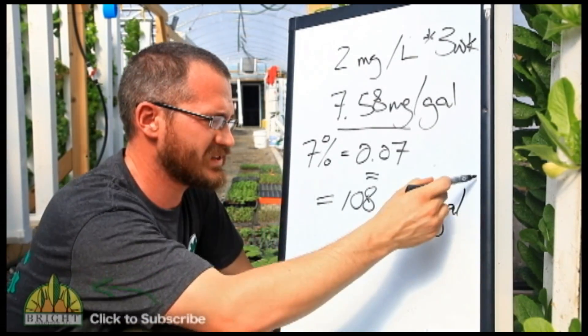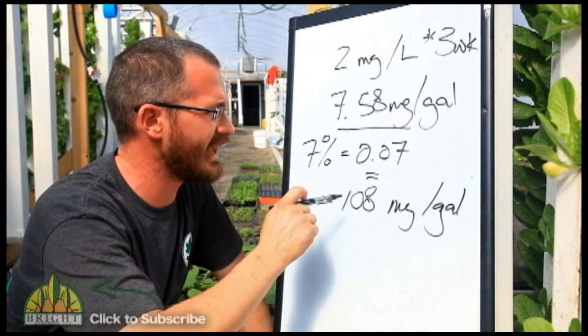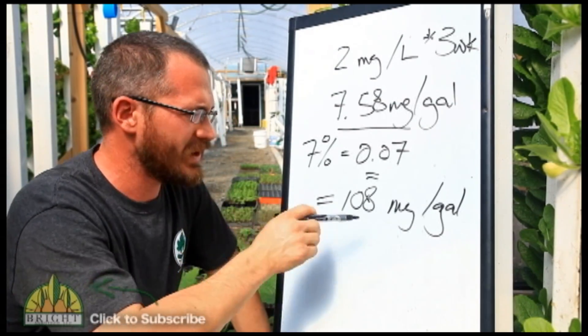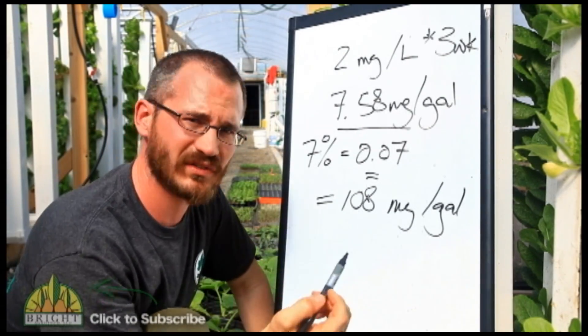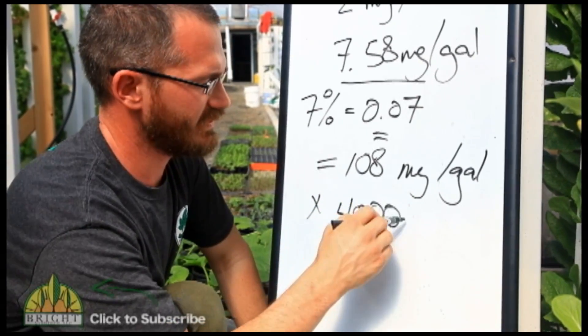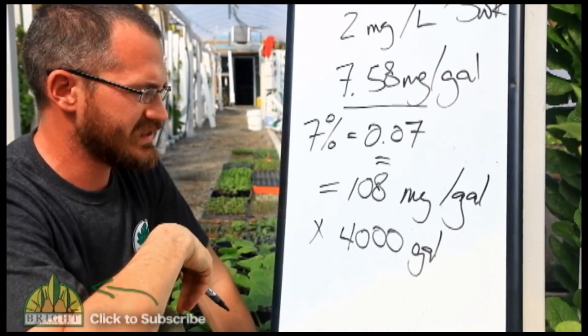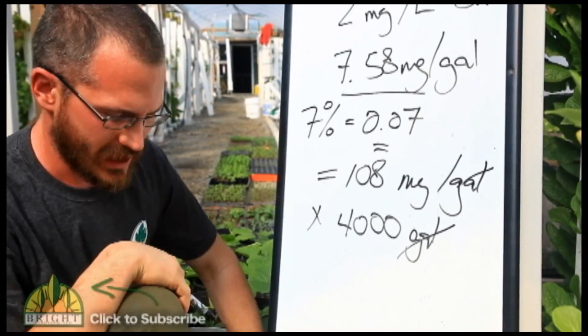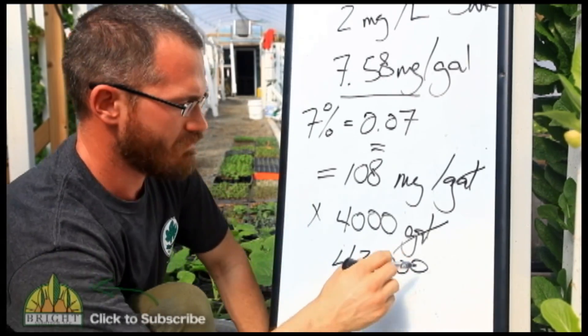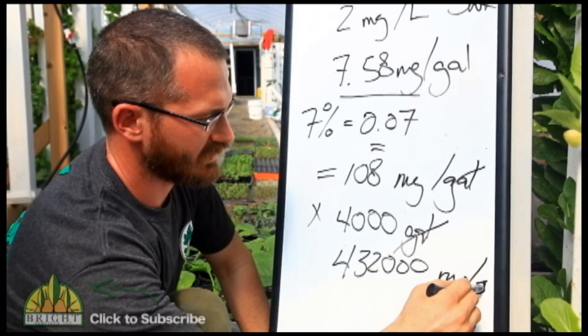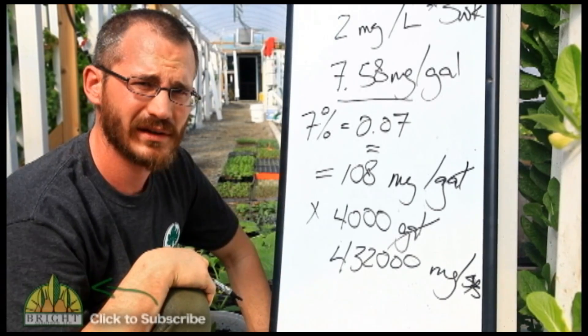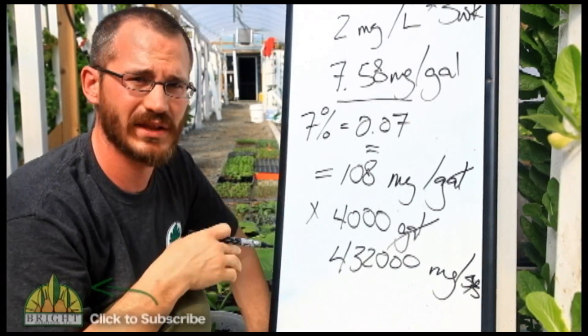So the next thing we need to do is take this number. This is the amount of powder required to get 7.58 milligrams per gallon of pure iron, and we need to multiply that by our system volume. So in our system, we've got a 4,000 gallon system, so we want to multiply that by 4,000 gallons. And what we end up with is around 432,000 milligrams per system. So this is how much we need to be putting in every three weeks to keep our iron levels at the Rikosi standard.